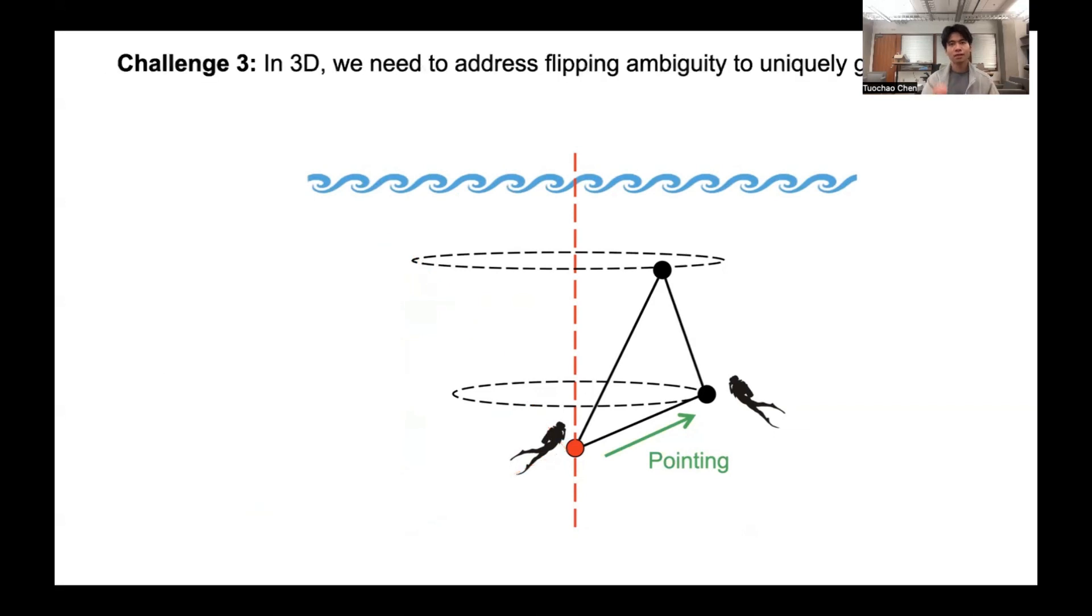But this still does not give us a unique 3D position, since we still have the flipping ambiguity, which is the mirror image position shown by the dotted line here. So we need to determine which of these two mirror images is the real position of the divers.